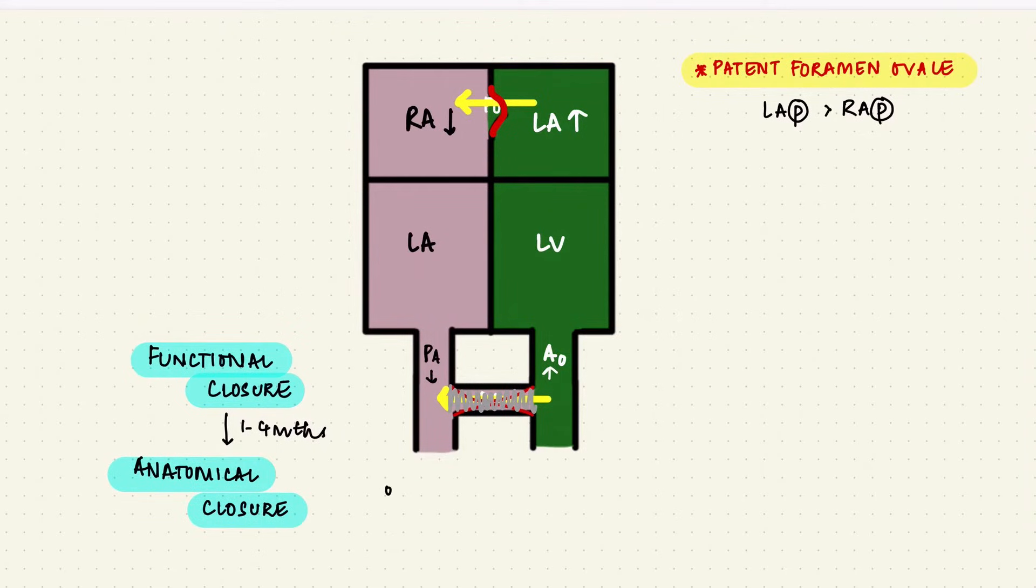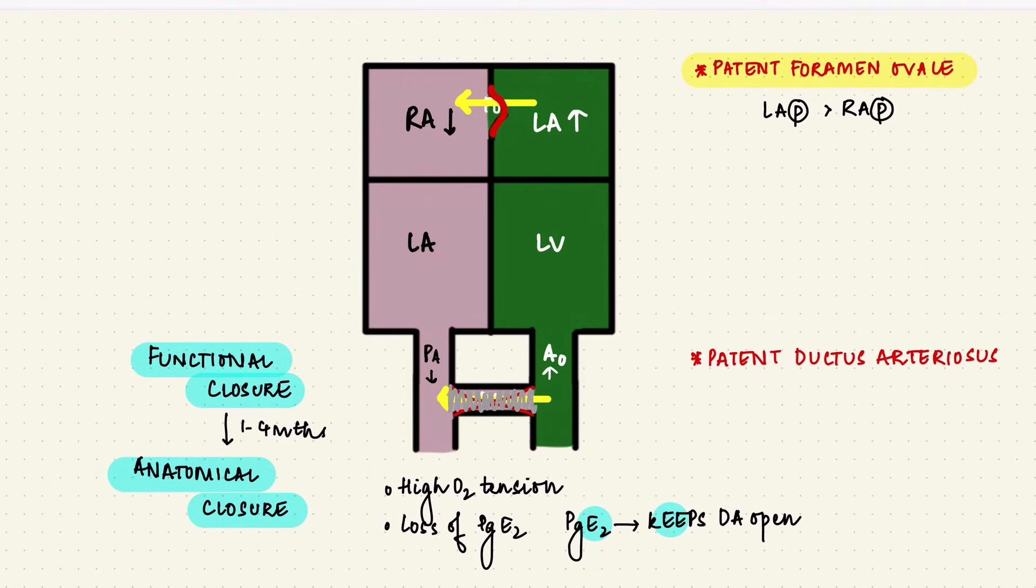So what makes the ductus close? There are two possible reasons. One is high oxygen tension. The partial pressure of oxygen increases from 15 to 20 mmHg during fetal life to 100 mmHg once breathing starts. Also, there's a loss of prostaglandin E2 and that has vessel relaxing effects. So PGE2 keeps the ductus open. If the ductus remains open, it's called a patent ductus arteriosus. However, contrary to fetal life, the shunt here is a left to right shunt from the aorta to the pulmonary artery because of the pressure changes.